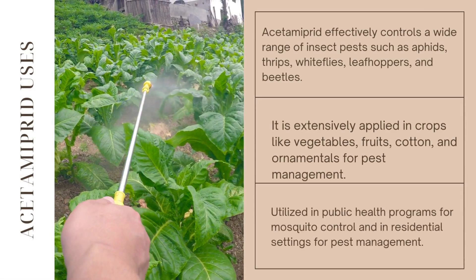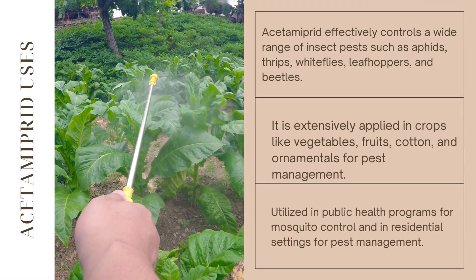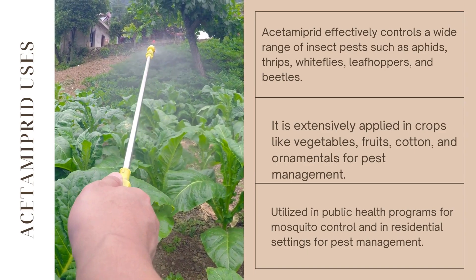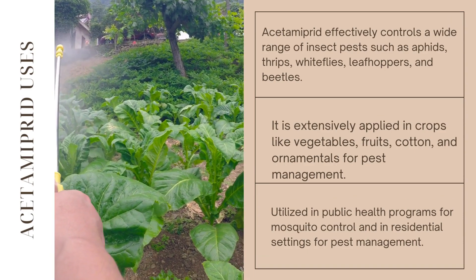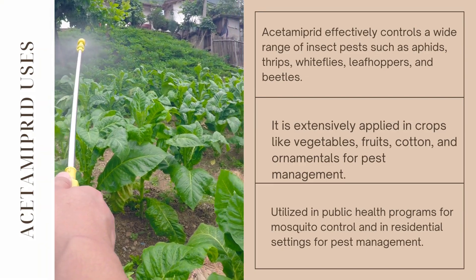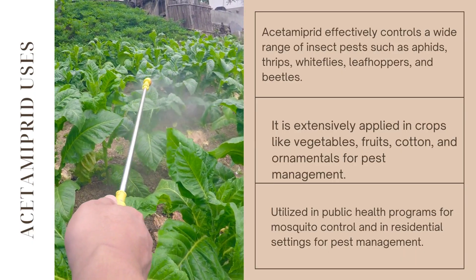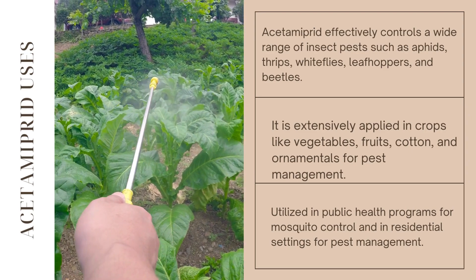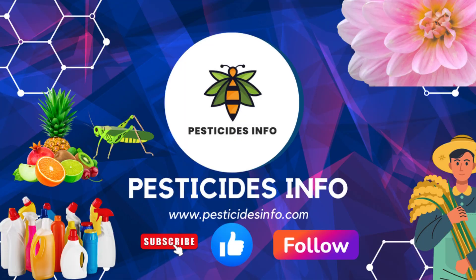Additionally, Acetamiprid is utilized in public health programs for mosquito control and in residential settings for pest management. Its systemic nature makes it particularly suitable for controlling pests feeding on the foliage of plants, ensuring thorough and long-lasting pest control.